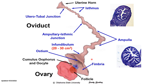The second part of the oviduct is the ampulla, which comprises about one half of the length of the oviduct. In terms of its mucosa, it is highly convoluted and well-developed. It feels soft to the touch, and its diameter is larger than the other part, which is the isthmus. The cross-section of the ampulla shows its highly convoluted mucosa.